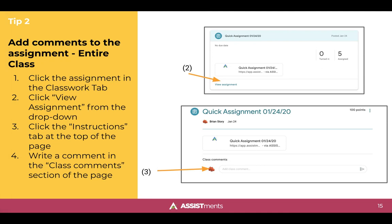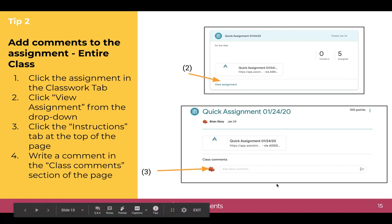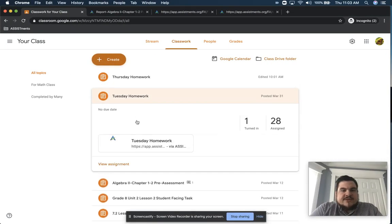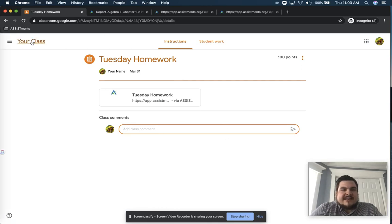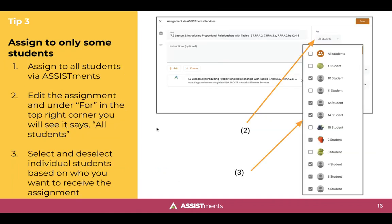Next is adding comments to an entire assignment. When you're in class, you anticipate big questions that many students may ask so you can address them proactively. From a distance you can do this in Google Classroom by adding a quick comment underneath any assignment that students can view. To do this, go to the classwork tab, click the assignment, and select view assignment in the drop-down. Then go to the instructions tab and you'll see the option to add a class comment that all students will see. Let me illustrate — I click view assignment, go to the instructions tab, and here I can add the comments I want the entire class to see.